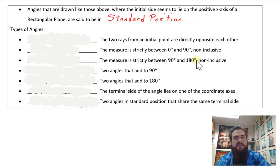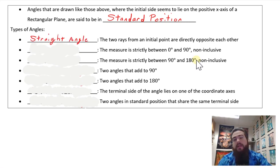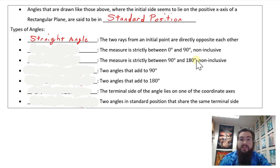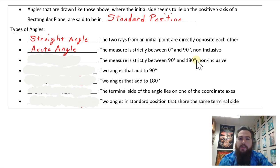There are various names for special angle measures. Two rays from an initial point that are directly opposite one another — 180 degrees — is referred to as a straight angle, because the two rays form a straight line. An angle measure between 0 and 90 degrees, such as 30 or 45 degrees, is called an acute angle. An angle larger than 90 but less than 180 degrees is called an obtuse angle.